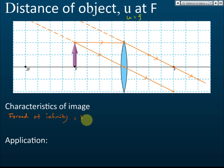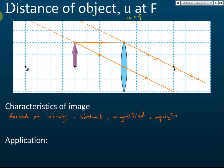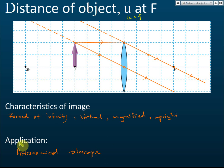Extending the lines backwards, we find they are still parallel — they do not converge. By definition, parallel lines intersect at infinity. So the image is formed at infinity. The image is virtual, because it is on the same side as the object. It is very magnified and upright. These characteristics correspond to the use in an astronomical telescope. Remember: when u is less than f, the application is a magnifying glass; when u equals f, the application is an astronomical telescope.